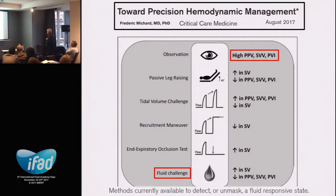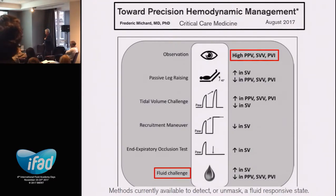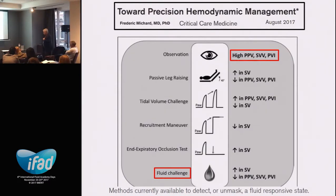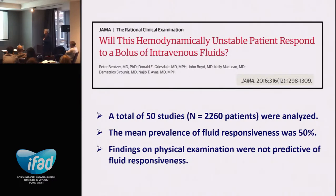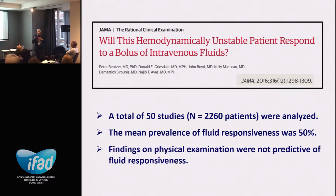In this excellent review by Frédéric Michard, the point is that we want to be more precise in our fluid management — to determine whether the patient will respond to fluids or not. We have dynamic parameters in mechanically ventilated patients: pulse pressure variation, stroke volume variation, plethysmographic variability index. The sobering reality is that only 50% of our patients respond to fluids, meaning one in every two patients will not respond. Since fluid can be detrimental, that puts a lot of responsibility on us to make the right decision.